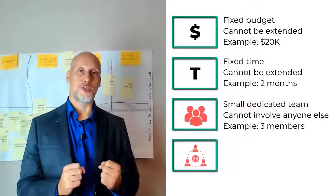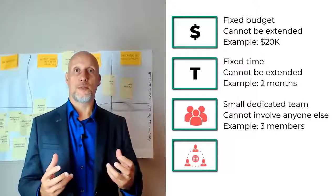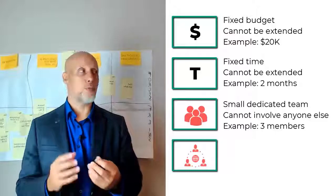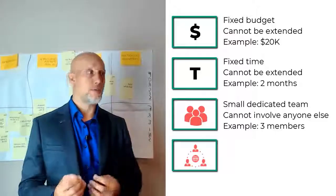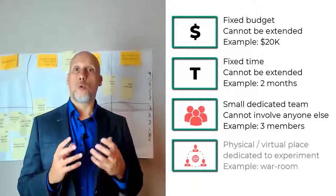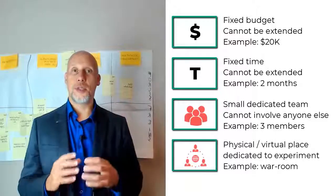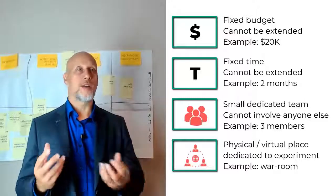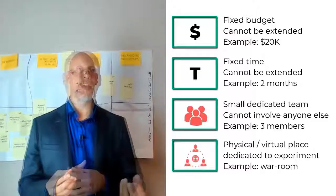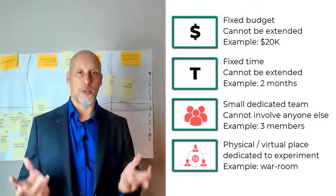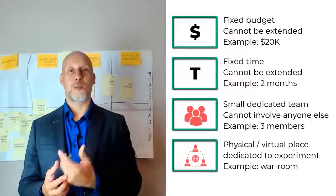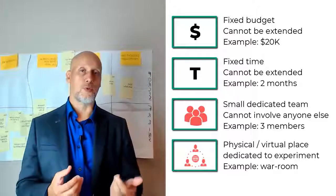And fourth, location. Location is something that helps people to collaborate spontaneously. We want to avoid that people are in different buildings and meet only here and there. Why not try to have a virtual or physical meeting room? It's like a lab or like a war room where it helps people to naturally collaborate. So these four types of boxes work together to make the experiment a very different type of experience and different types of way of working.